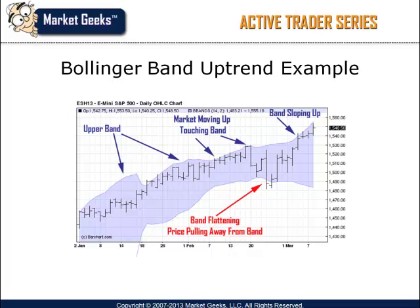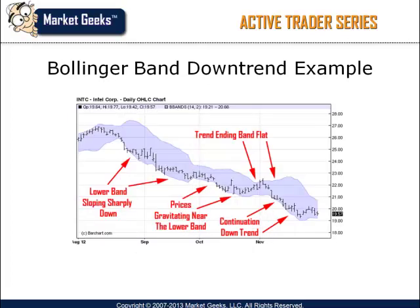This is a good example so you can see how it looks visually. Here is another example of the Bollinger Band catching a strong downtrend move. Notice the slope of the lower band and how the prices are gravitating towards the band — this is a good sign that markets are headed sharply down.